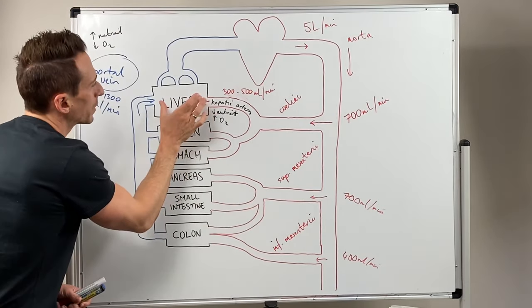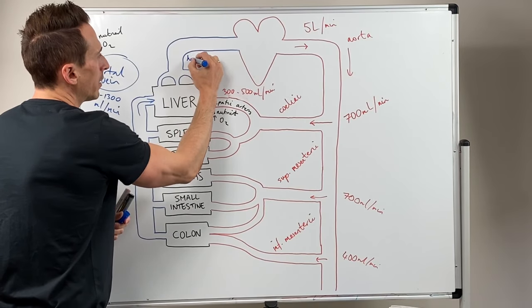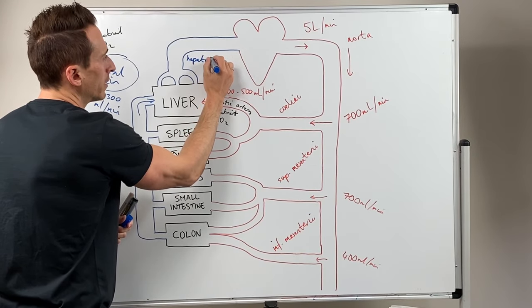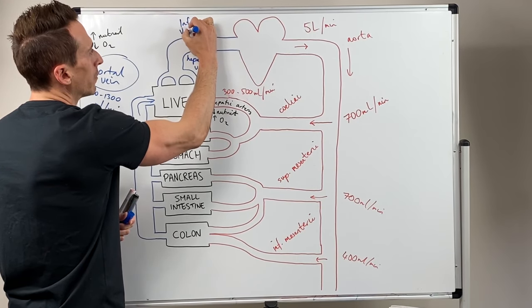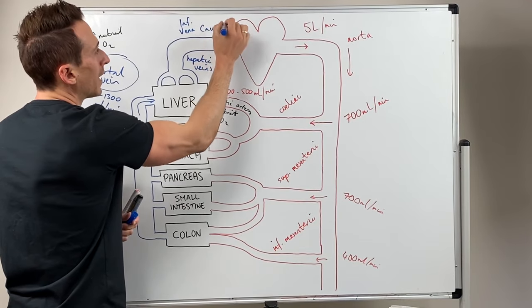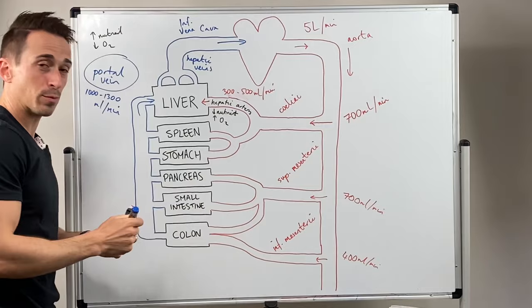Everything else gets drained into the hepatic vein or the hepatic veins, which then go to the inferior vena cava. And then that goes back to the heart and the whole process begins again.